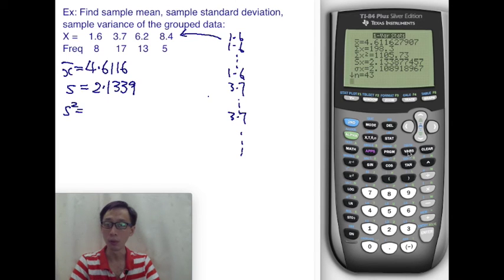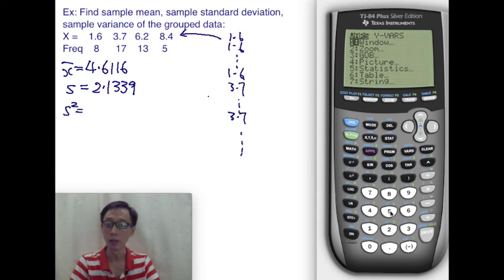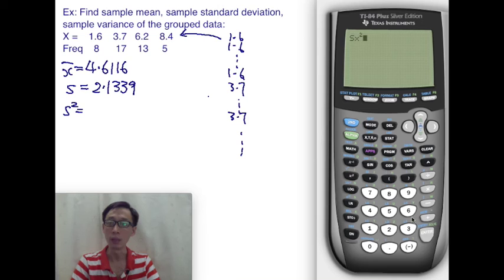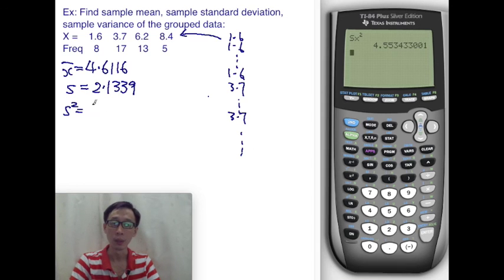So as before, we click on VARS and 5, the statistical set of variables, and select SX. Then we square it to get the variance in its full precision, and then we can round this to whatever decimal places we like.